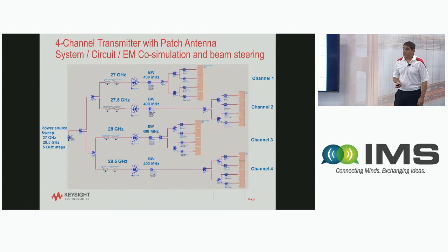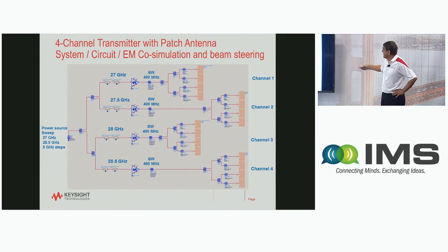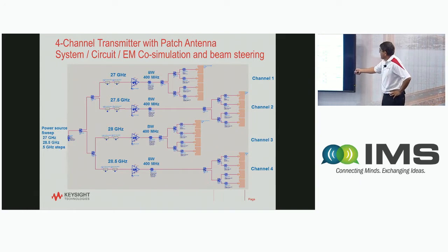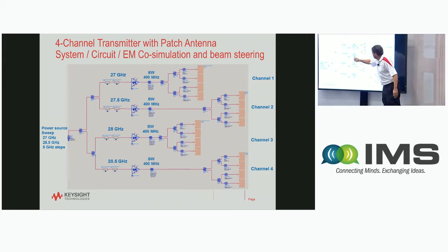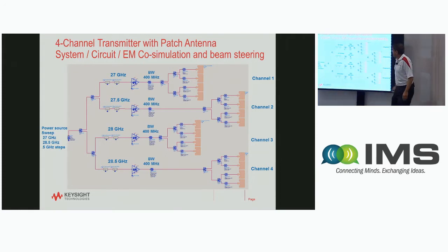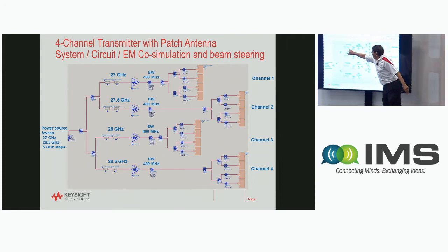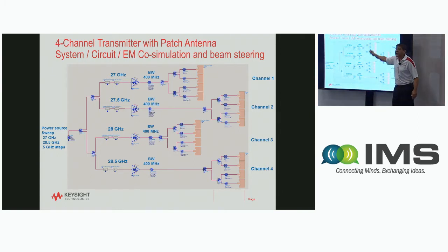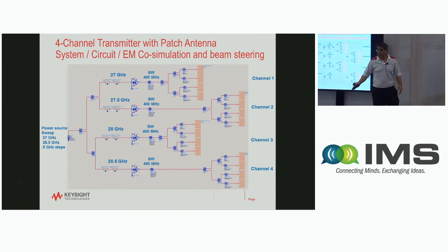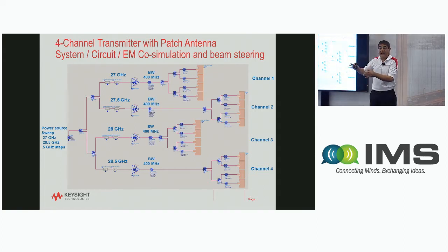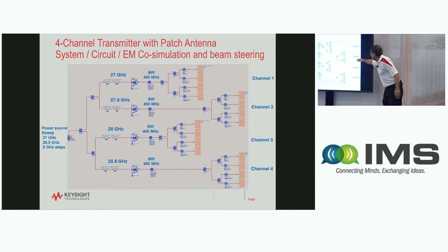This is a picture of the four-channel system put together in ADS — an ADS schematic. The power source spans 27 to 28.5 GHz, with four channels, each 400 MHz bandwidth, separated by filters. The system includes preamps, a power amplifier, filtering, power dividers, and a phase shifter to control the beam, interfacing with a patch antenna simulated separately in Momentum EM simulation and imported for co-simulation.